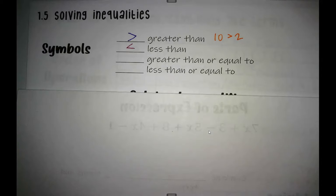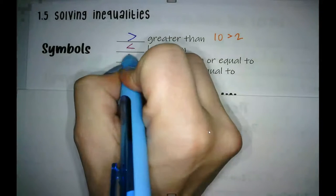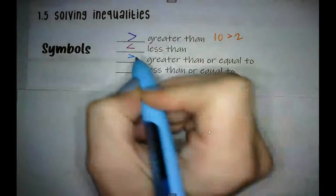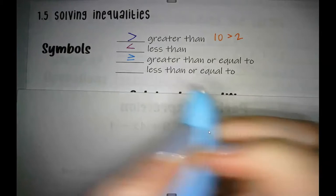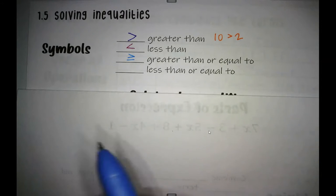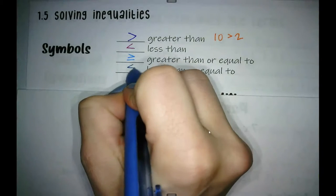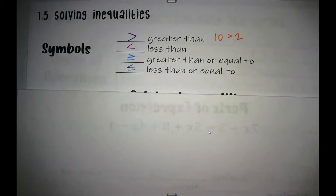And then the greater than or equal to, it's the same greater than symbol and then half of the equal sign with that little line underneath. And then the less than or equal to sign, less than sign, half of the equal to sign.